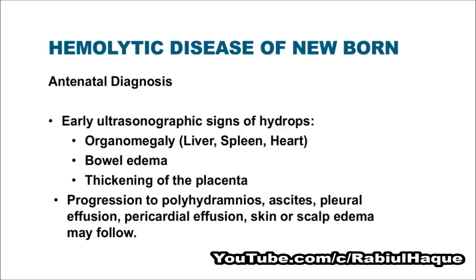Here we are seeing the early ultrasonographic signs of hydrops. They will include organomegaly, bowel edema, and thickening of placenta. Progression to polyhydramnios, ascites, pleural effusion, pericardial effusion, and skin or scalp edema may follow. All these are ultrasonographic features of hydrops that we can see in a case of hemolytic disease of newborn.